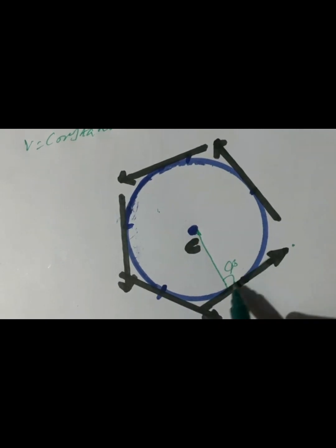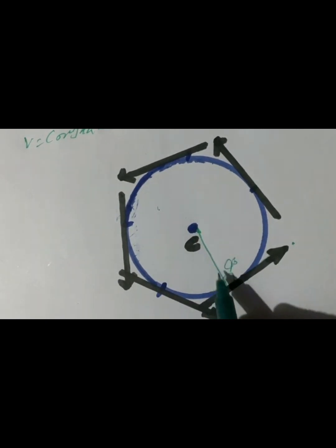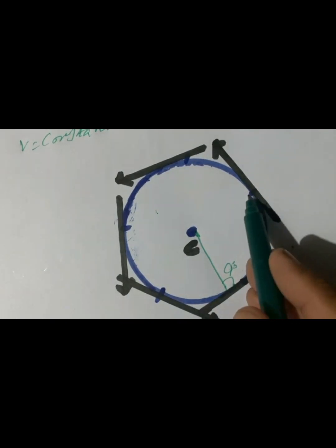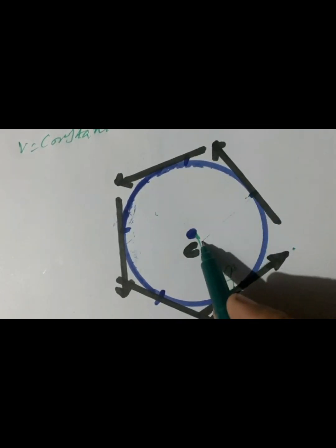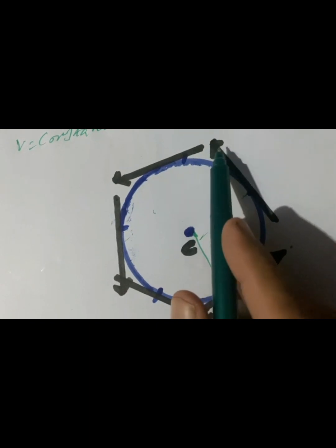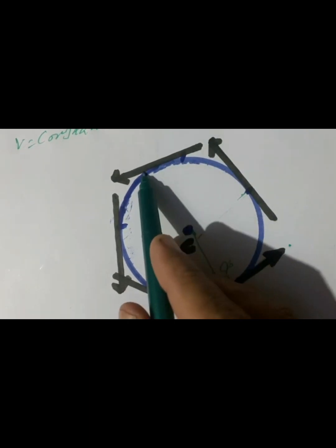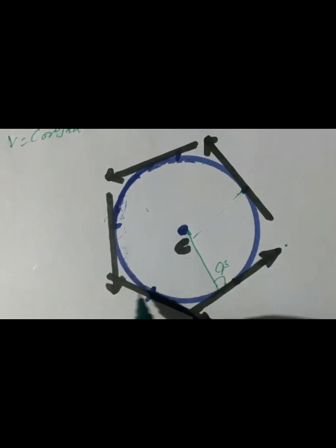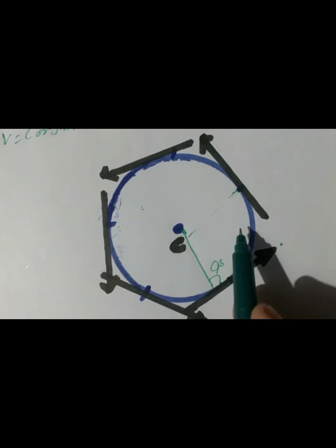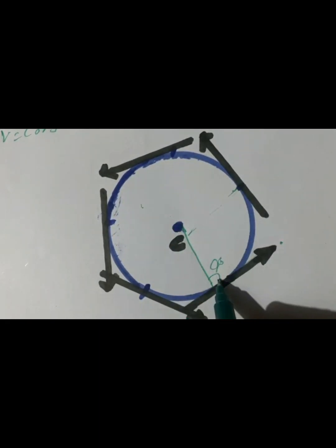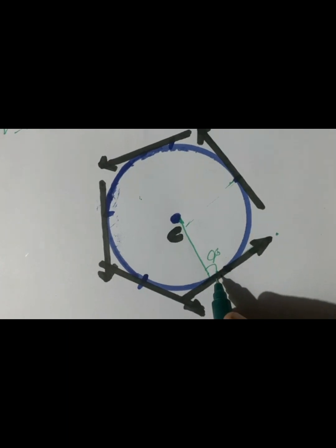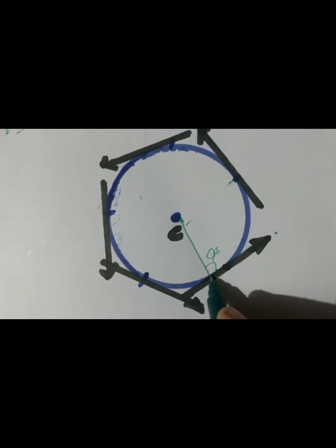A tangent line is a line which makes an angle of 90 degrees with the radius. At this point, its velocity direction is like that, and at another point its velocity is like that. By drawing a tangent line, we can find out the direction of a body at that particular point.